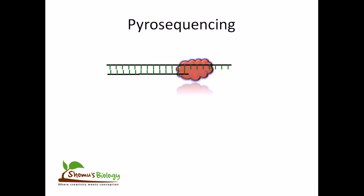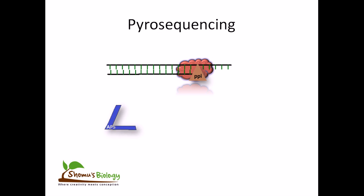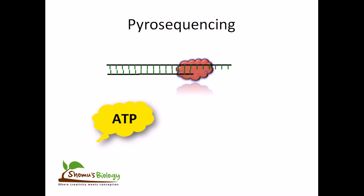As the nucleotide is being added, let us show one nucleotide. After adding the nucleotide, it will generate PPi, or inorganic pyrophosphate, which will react with APS — adenosine phosphosulfate — to generate ATP and sulfate. Here the sulfate is not shown.